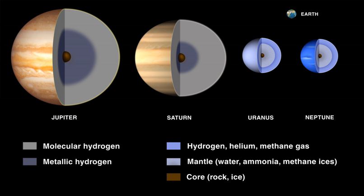Siderophile elements have an affinity for iron and tend to concentrate in the core. Chalcophile elements form sulfides, and atmophile elements dominate the atmosphere. Within each group, some elements are refractory, remaining stable at high temperatures, while others are volatile, evaporating more easily, so heating can separate them.